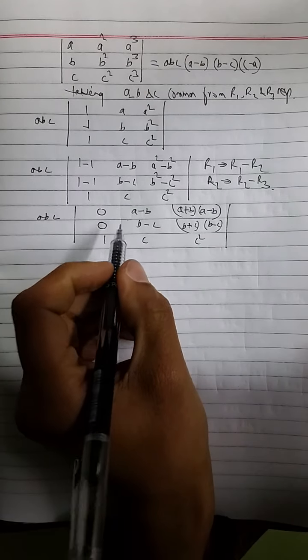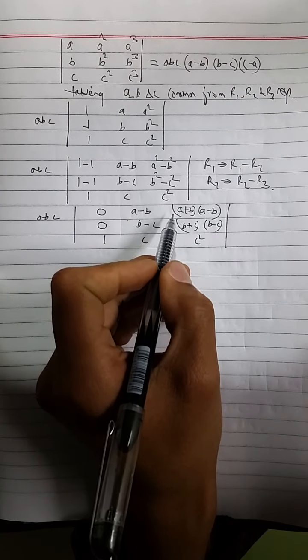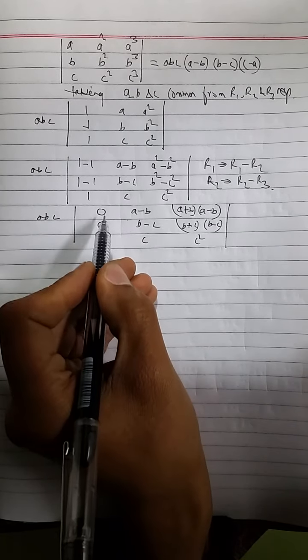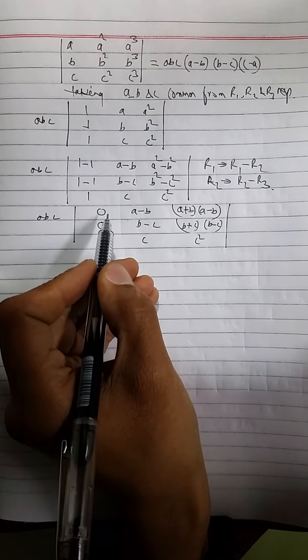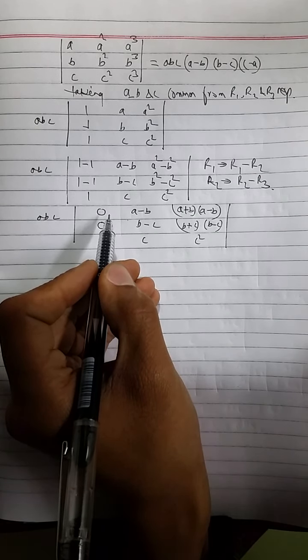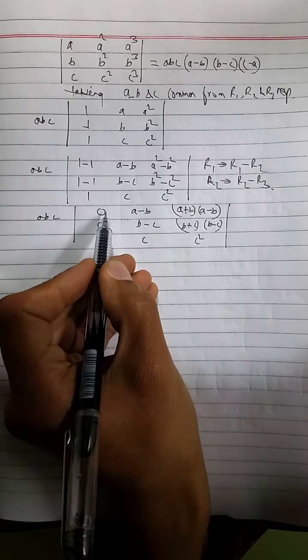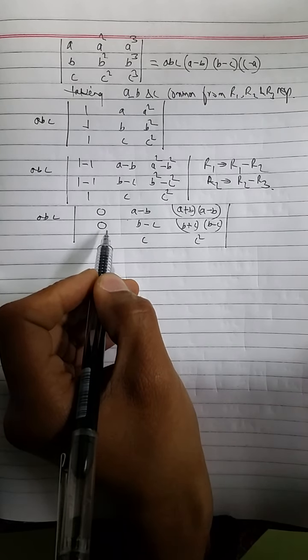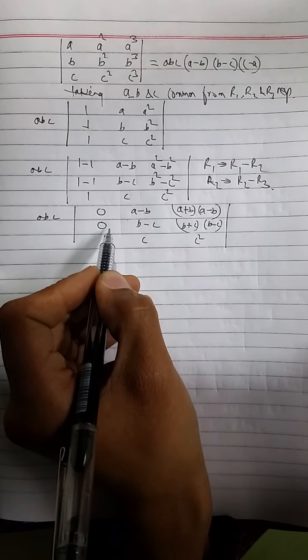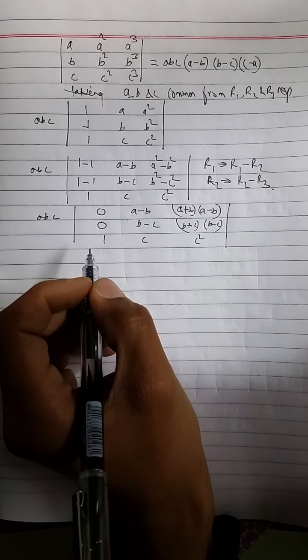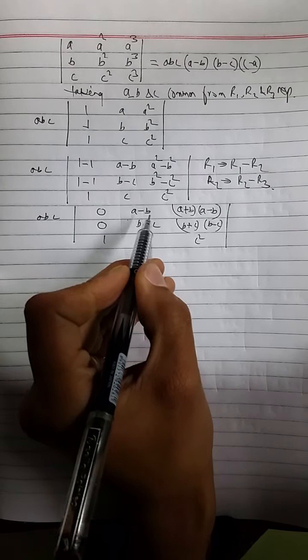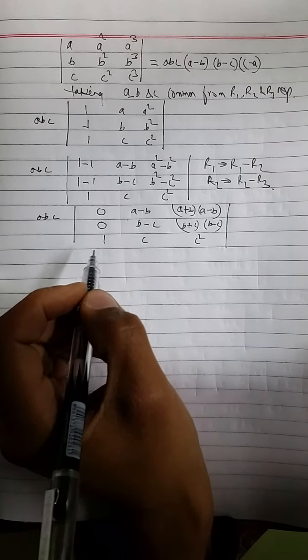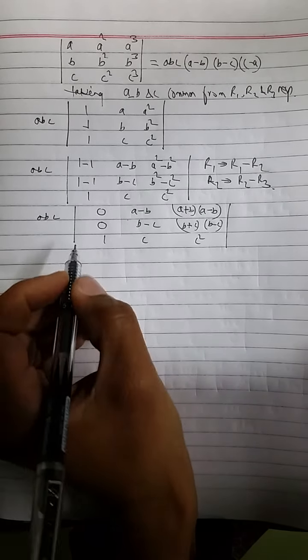Now, let's see. First row consists A minus B as common term. Why can we say so? 0 means 0 into any number or any real number. So 0 can be considered as 0 into A minus B for first row. And 0 can be considered as 0 into B minus C for second row. So with this regard, we can say that A minus B and B minus C are common in first row and second row respectively. So they are taken common out.